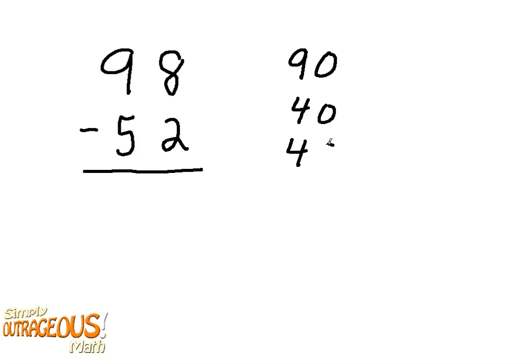In this example, we're going to have 98 minus 52. Let's start out with 90, 40, 48, 46 is our answer. 90 minus 50 is 40, 40 plus 8 is 48, 48 minus 2 is 46, that is our answer.